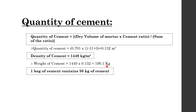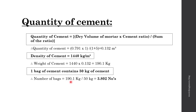One bag of cement contains 50 kg of cement. So if you divide the weight of cement by 50 kg, then you will get the number of bags. Therefore, number of bags equals 190.1 kg divided by 50 kg, which equals 3.802 — approximately 4 bags of cement.